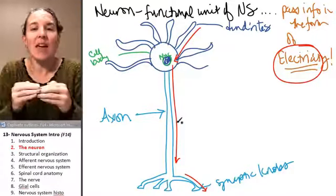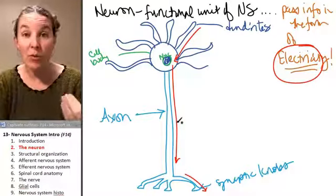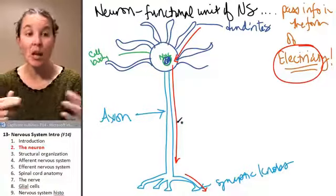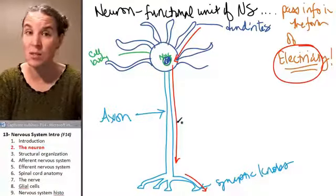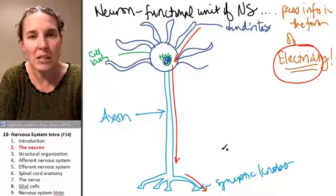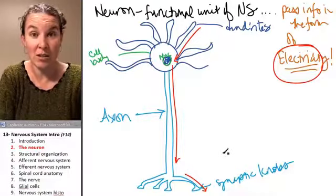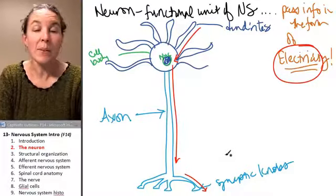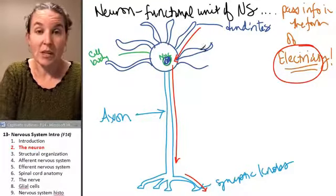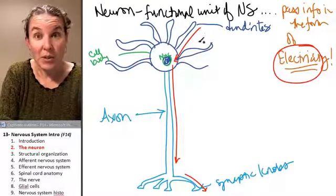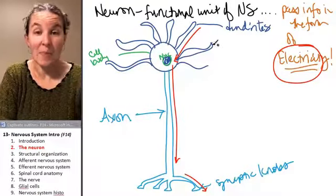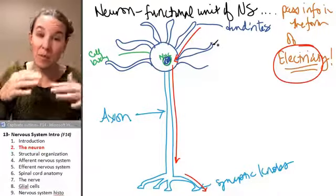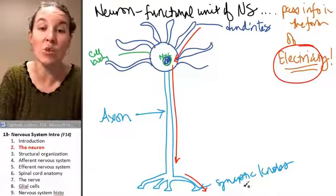As soon as you accept that information can travel through this cell, as soon as you're like, oh, okay, I can accept that, that makes sense to me, the whole rest of the nervous system is going to be a lot easier because we're not going to go into the details of how that information is traveling. How does the cell do this? That's a topic for physiology. We're just going to accept that, indeed, it happens. So dendrites bring information into the cell body. That information passes through the axon toward the synaptic knobs.